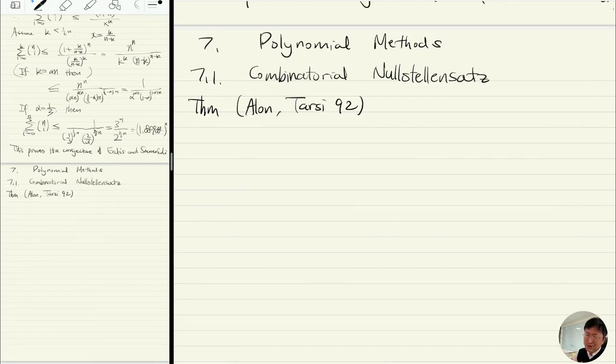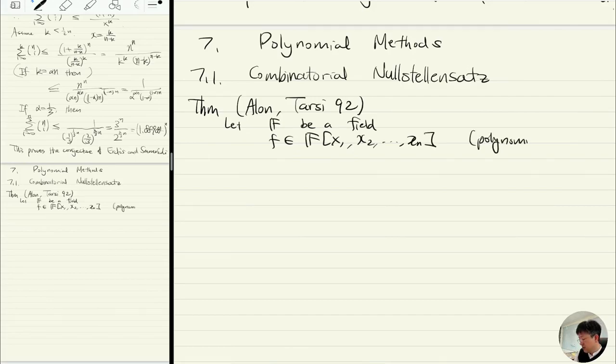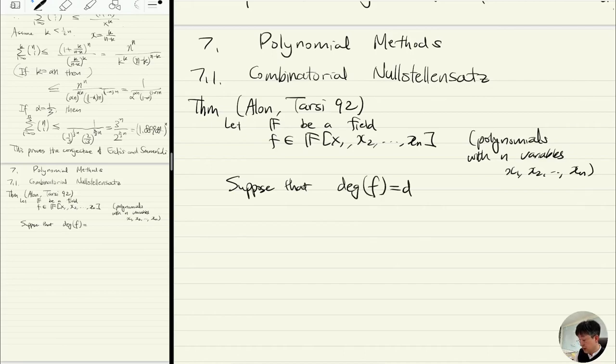Let me describe this theorem, due to Alon and Tarsi in '92, which will be really useful. This is about polynomials, roots of polynomials. Let F be a field and F be a polynomial with n variables. Suppose that the degree of F is the sum of these things, and the coefficient of the monomial product of Xi to the Di's power is nonzero.